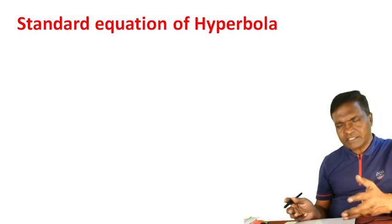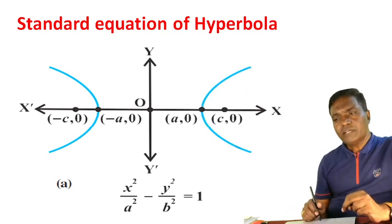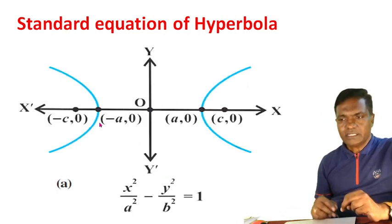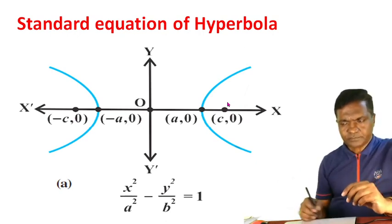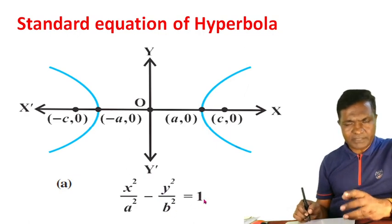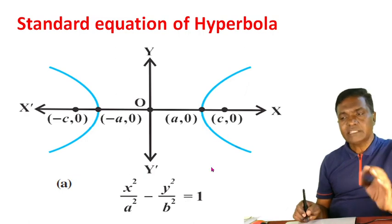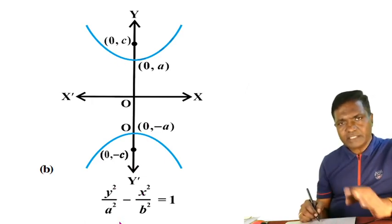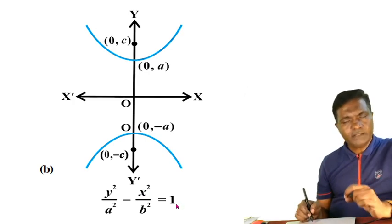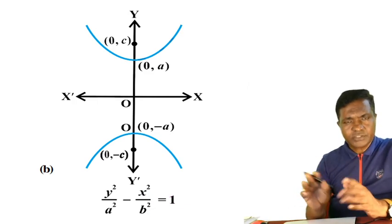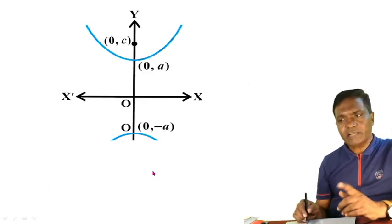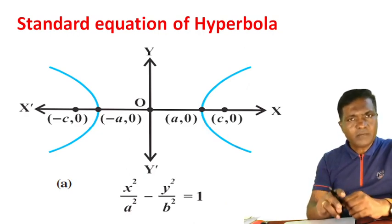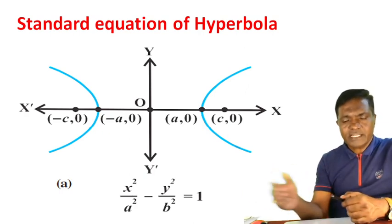Now the standard equation of hyperbola has two varieties. First: when the transverse axis is along the X-axis, the equation is x²/a² − y²/b² = 1. Second: when the transverse axis is along the Y-axis, the equation is y²/a² − x²/b² = 1. These two basic forms you need to know and derive — this will be covered in the next video.